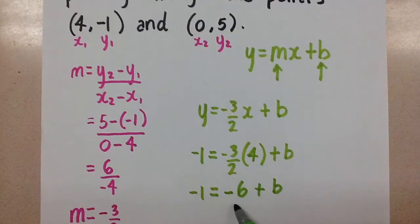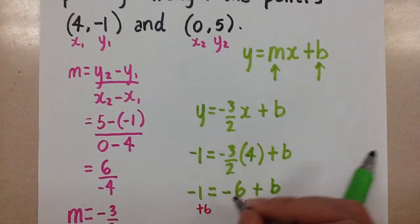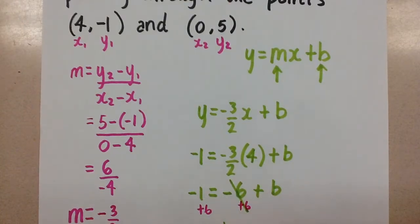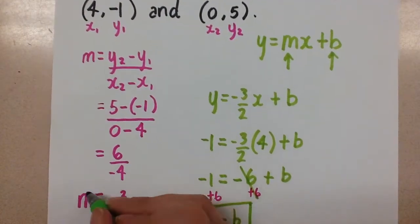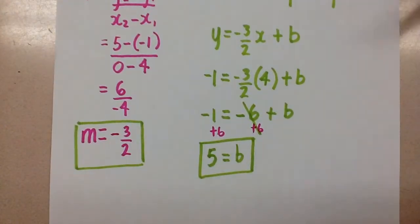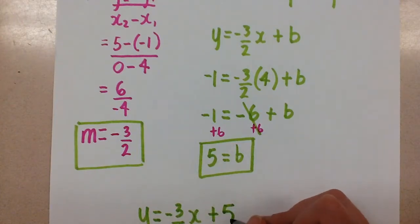And now we want to move that negative 6 to the other side to get the b by itself. If it's minus 6 here, we add 6 on both sides. That's the opposite operation. So these cancel, and we're left with b equals negative 1 plus 6 is positive 5 here. So there's our y-intercept, and there's our slope for the line. We're going to take both of those things and plug them into the final equation. y equals negative 3 over 2x plus 5.